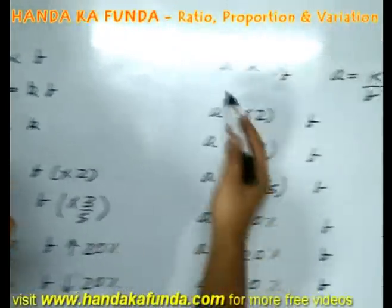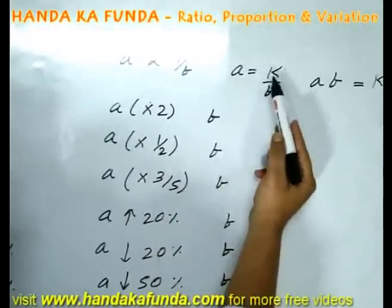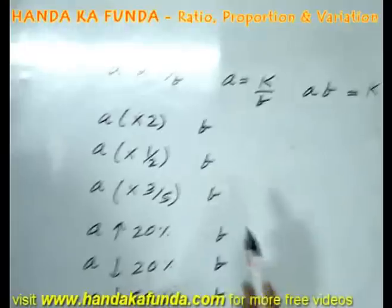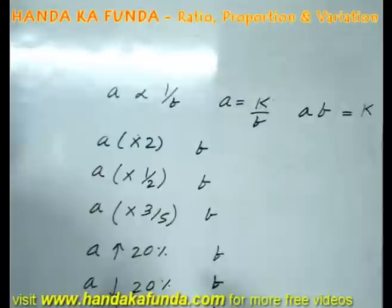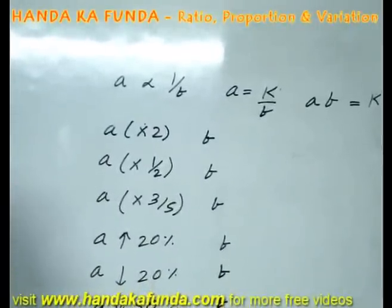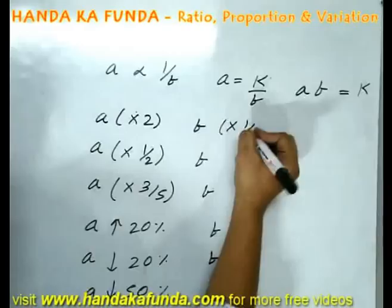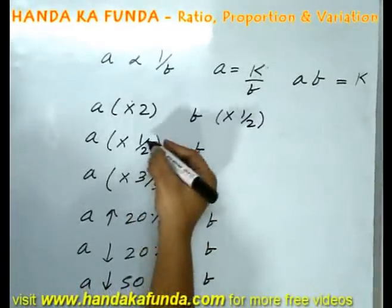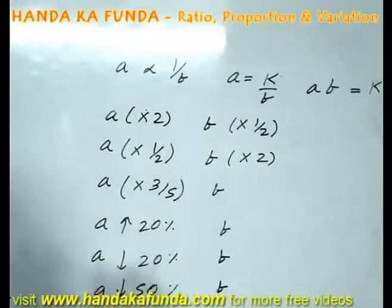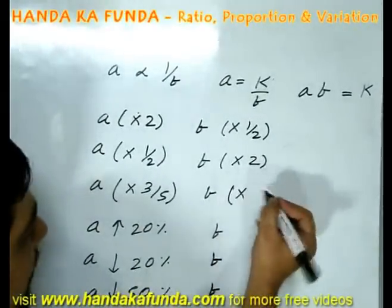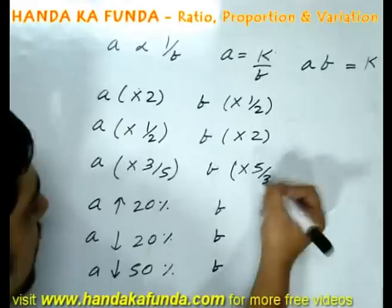In the other case, A is inversely proportionate. For solving the equation, you can say A is equal to a particular constant by B, or the product of the two terms remains a constant. How will you tackle this? That means if A doubles, what will happen to B? B will have to become half of the original. If A becomes half of the original, B will have to double. If A becomes 3 by 5 of the original, then to compensate for that, B will have to become 5 by 3 of the original.